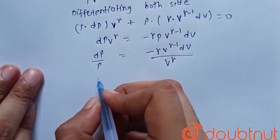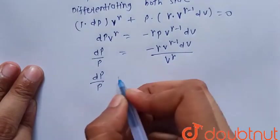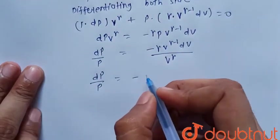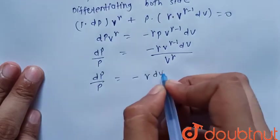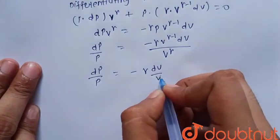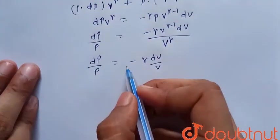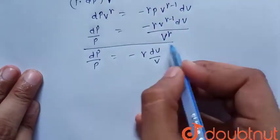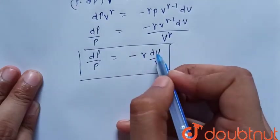It will be equal to dP upon P is equal to minus gamma V to the power gamma dV upon V. So our final answer is dP upon P is equal to minus gamma dV upon V.